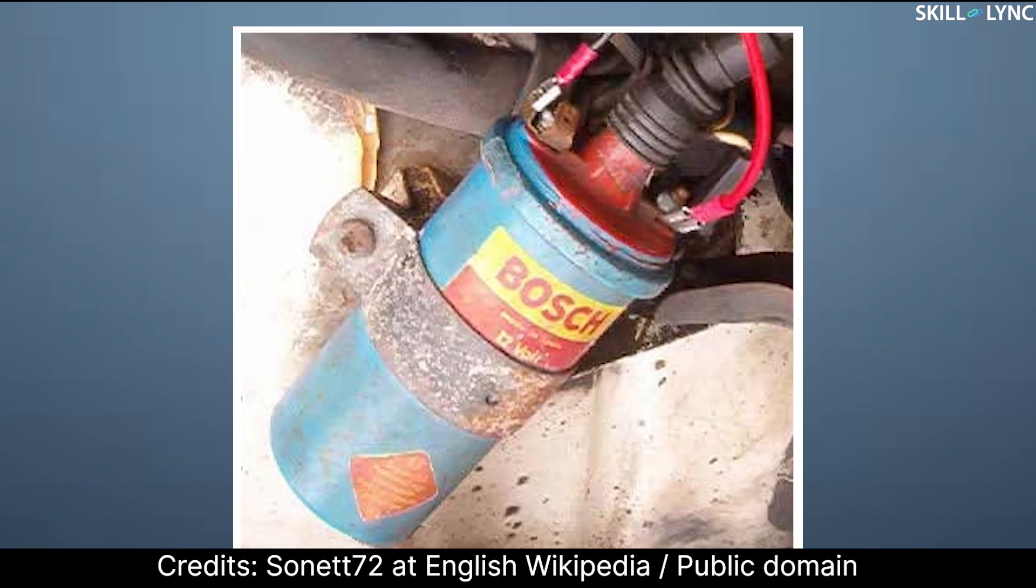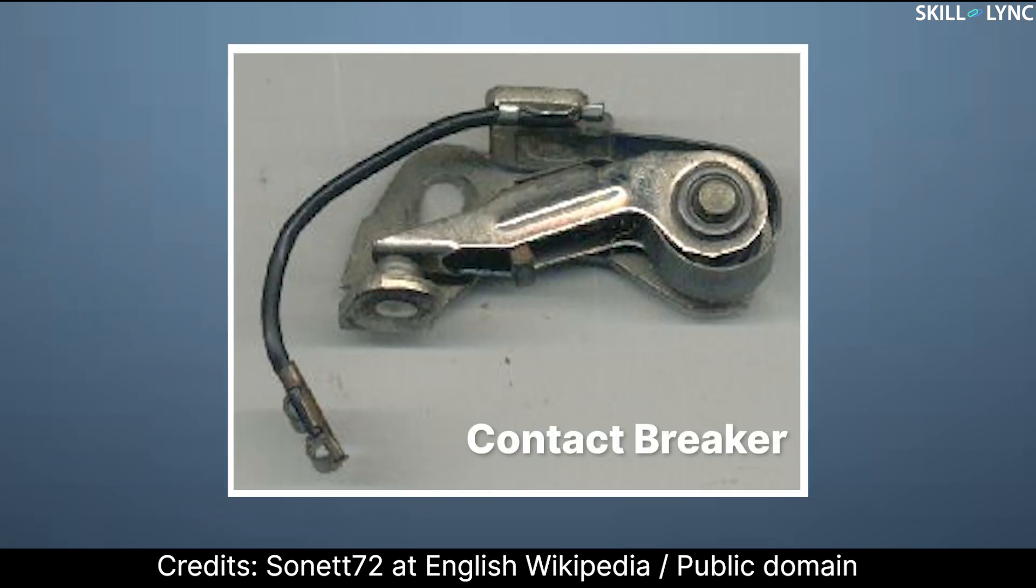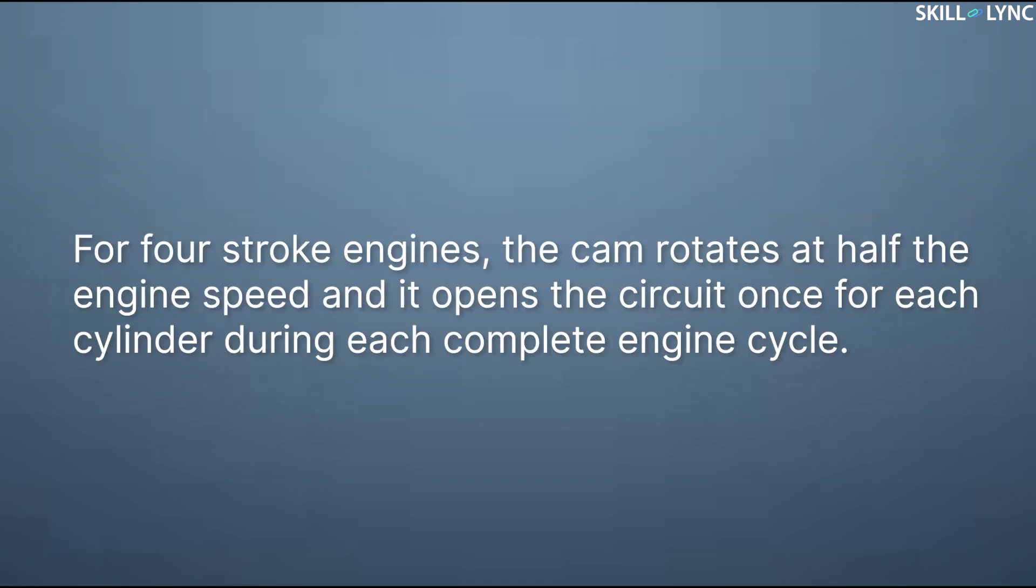Next, we have a contact breaker, a mechanical device which is used for establishing and breaking the contact in the circuit. The contact breaker is operated using a cam. For four-stroke engines, the cam rotates at half the engine speed and it opens the circuit once for each cylinder during each complete engine cycle.